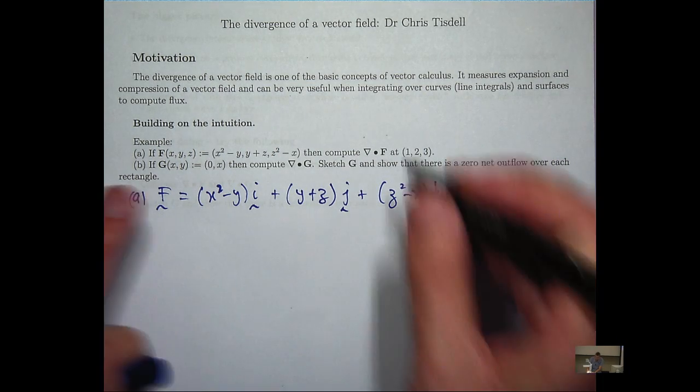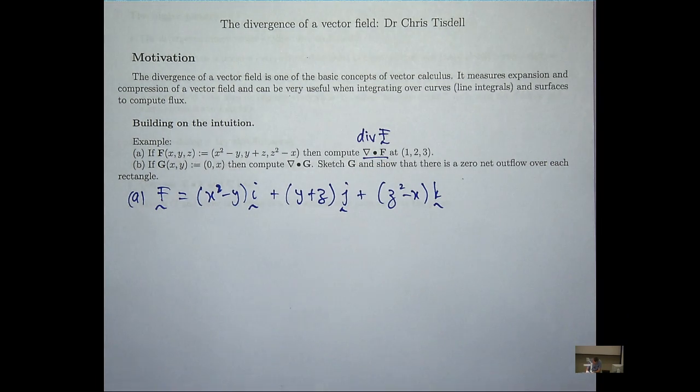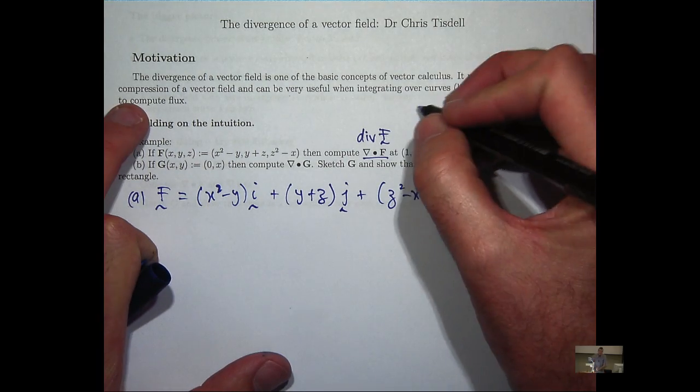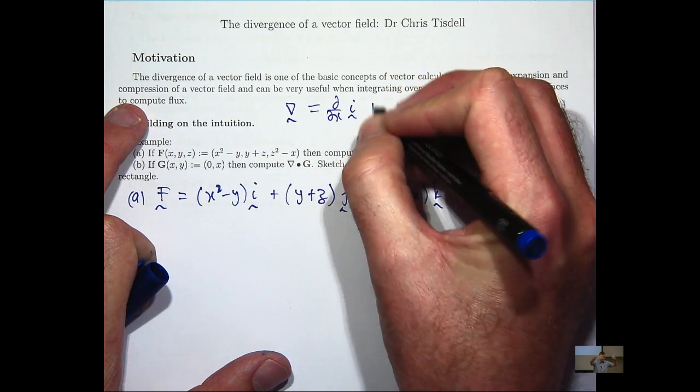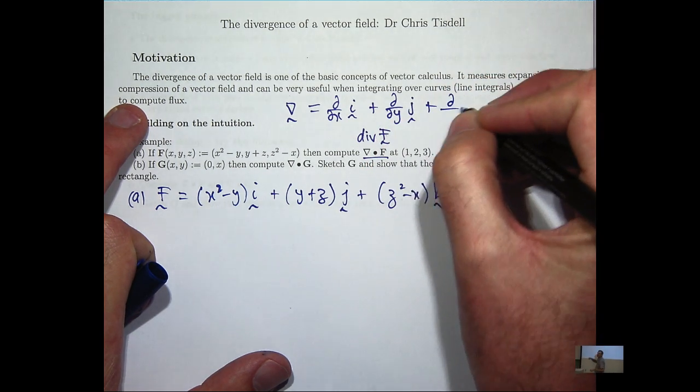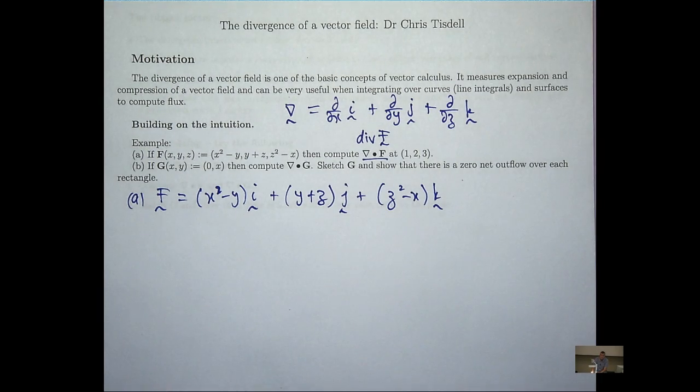Now this notation, you can also write it as div f. But the nice triangle, the nabla dotted with it, gives you a reminder of how you compute it. This nabla, remember, is just a symbolic vector. So in this context, this del operator, this triangle type operator, is going to operate on the vector field f via a dot product.